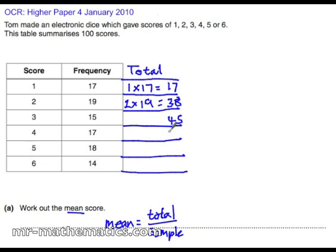4 times 17 is 68, 5 times 18 is 90 and 6 times 14 is 84. Now the total of that or the sum is 332 by adding all of them together.